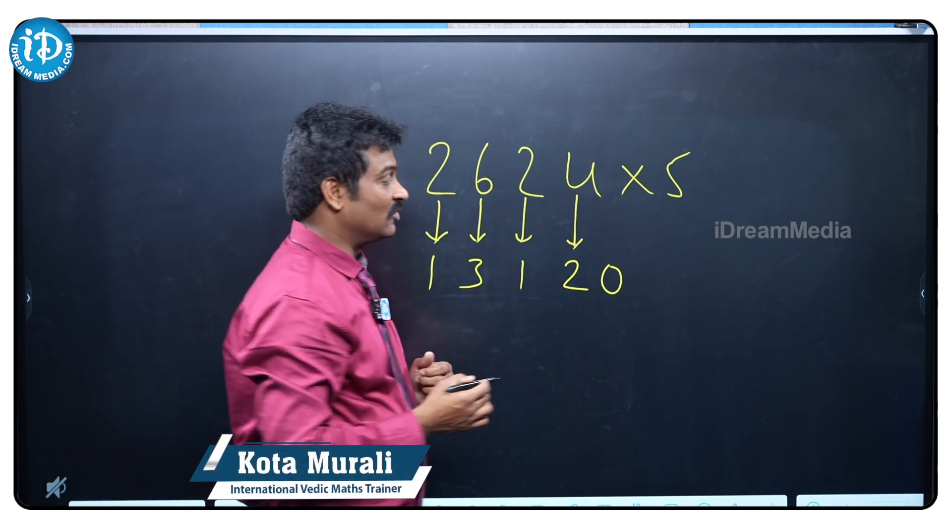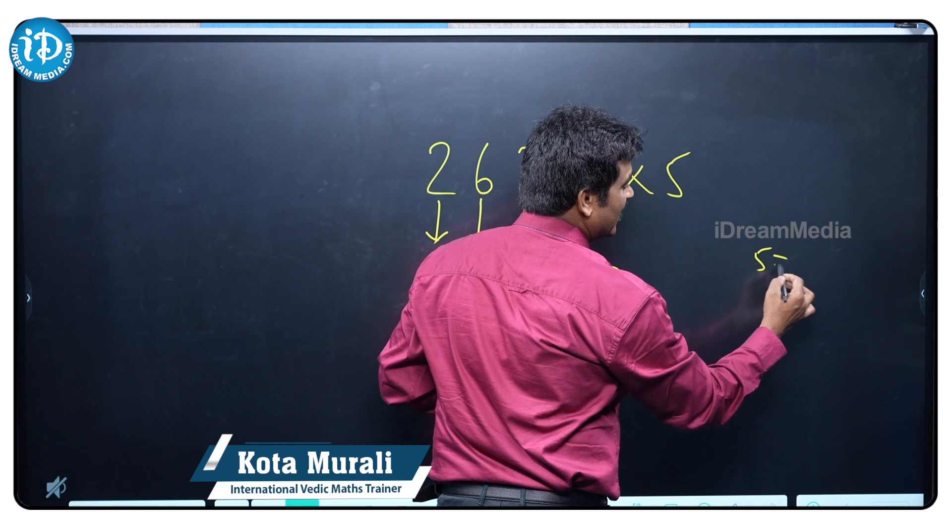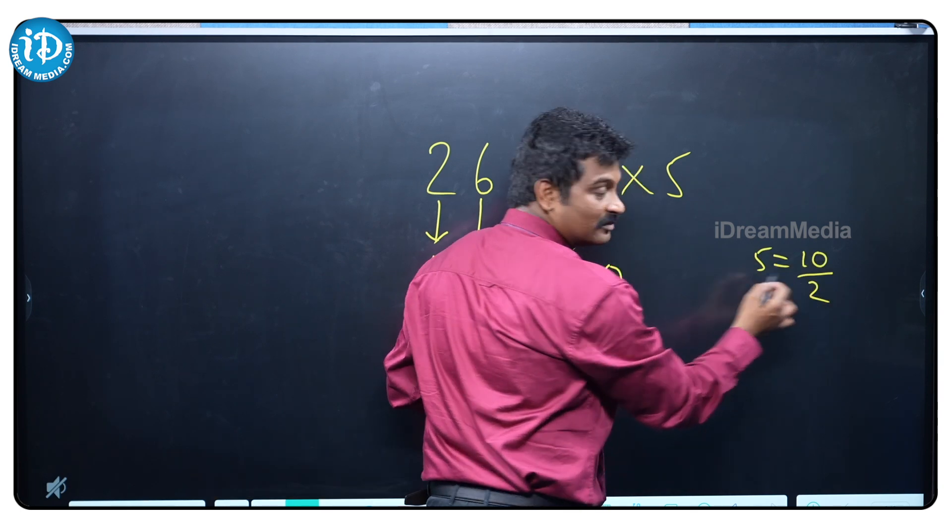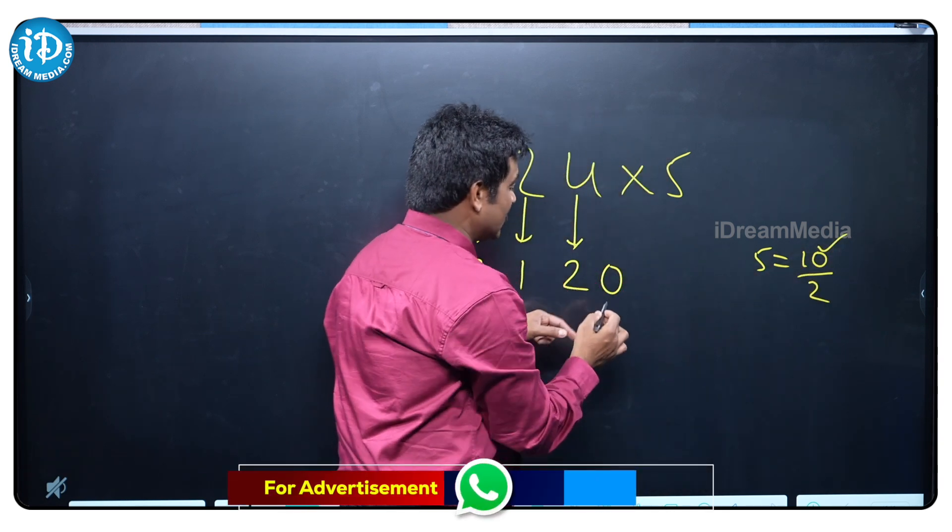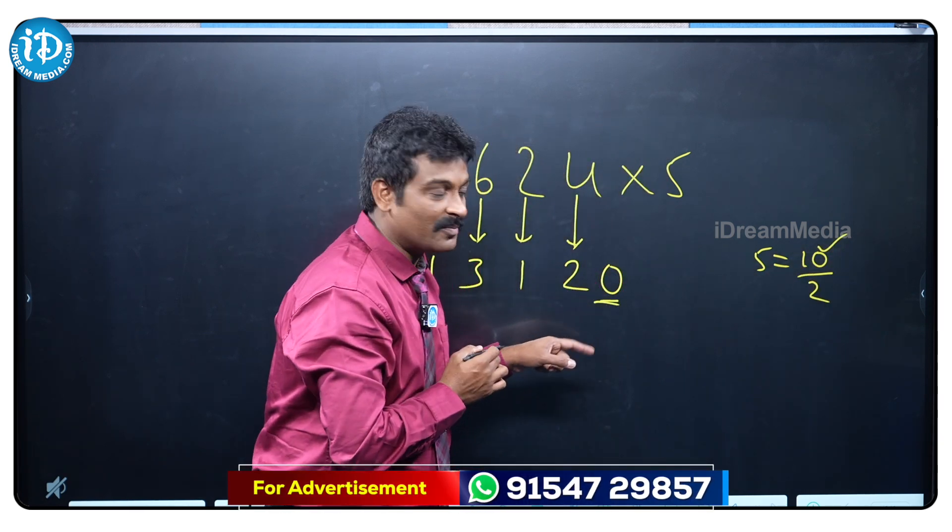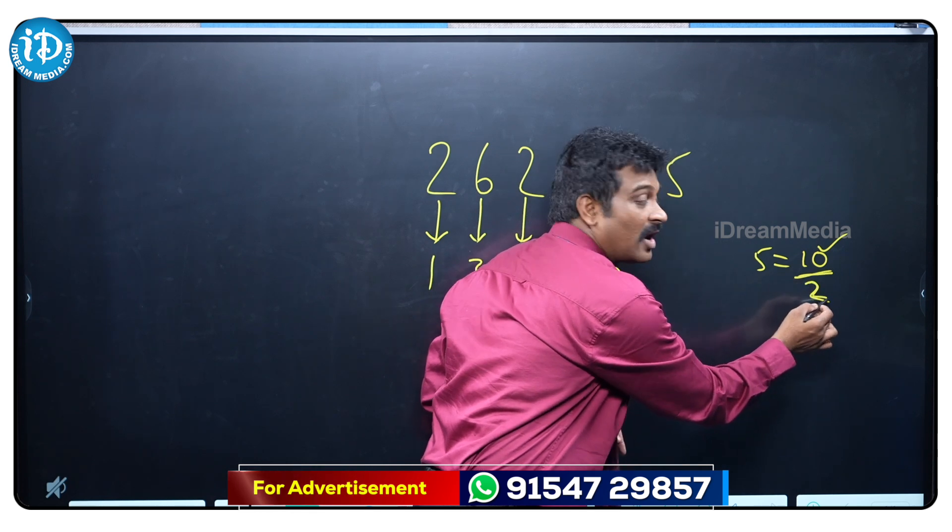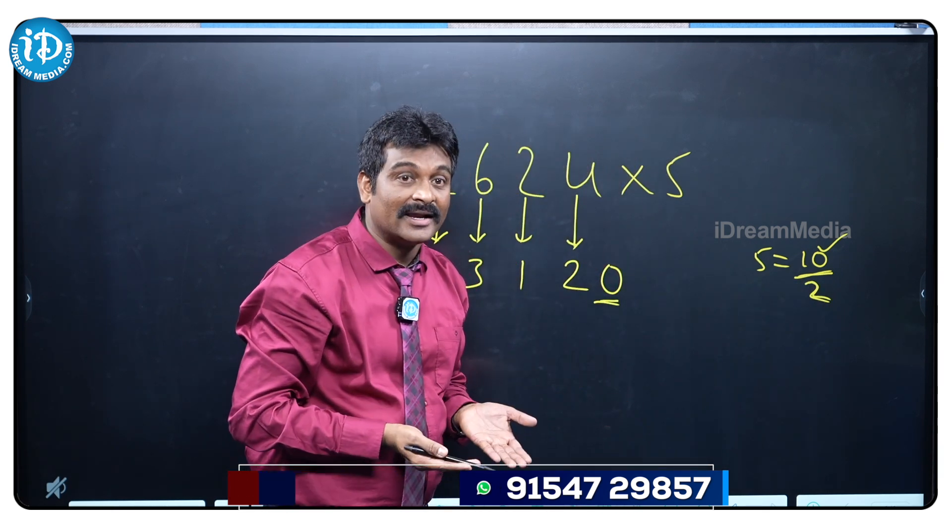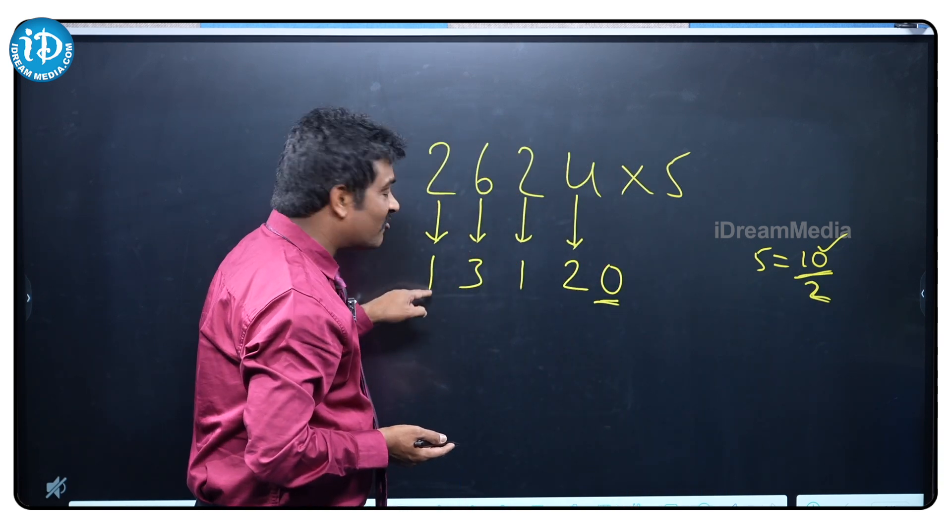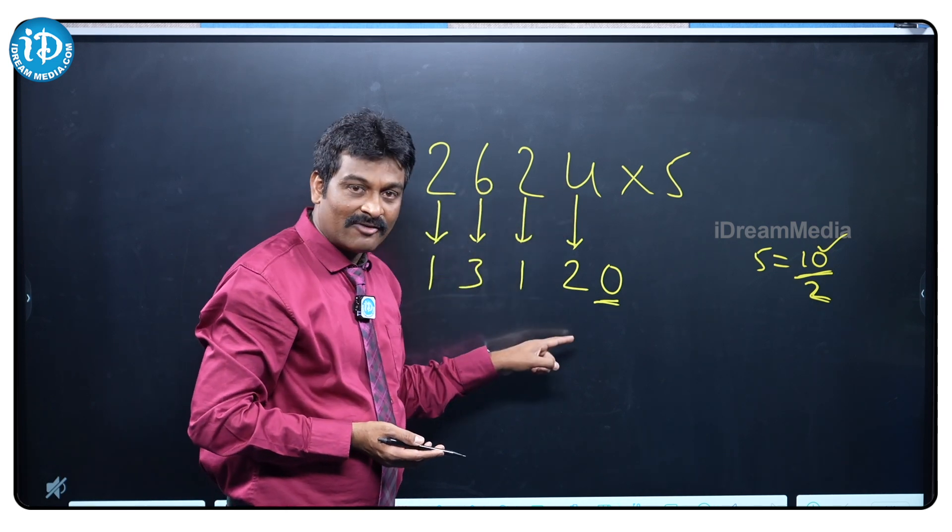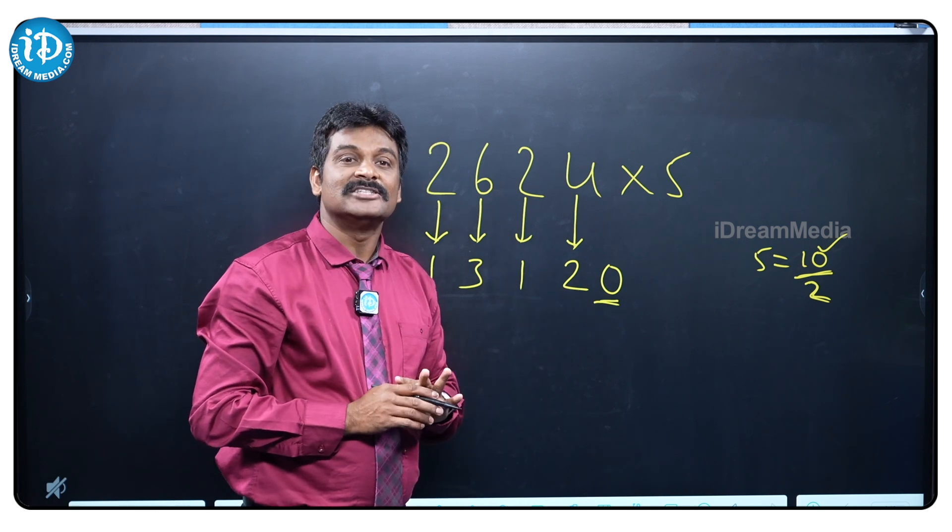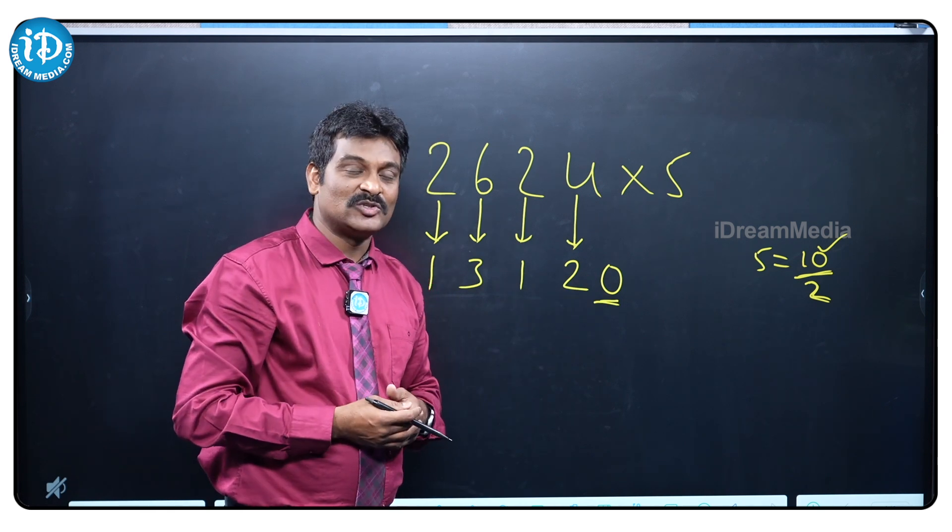Why we are attaching always 0? Most of the students have a doubt. Actually, 5 means what? 10 by 2. 10 means we have only 1 zero, that's what we are attaching always 0. By 2 means what? Half the number. That's what, 2 half 1, 6 half 3, 2 half 1, 4 half 2, attach a 0.